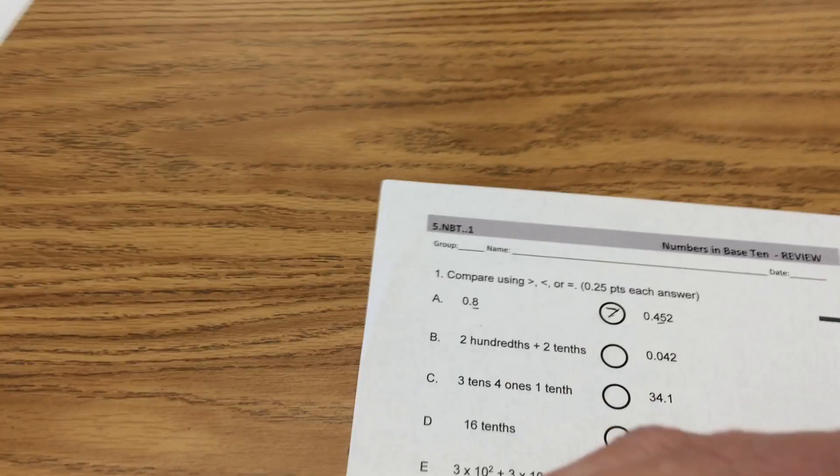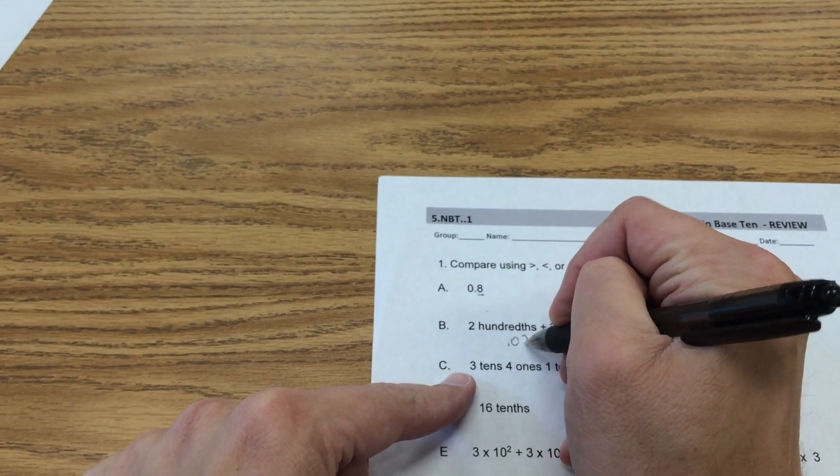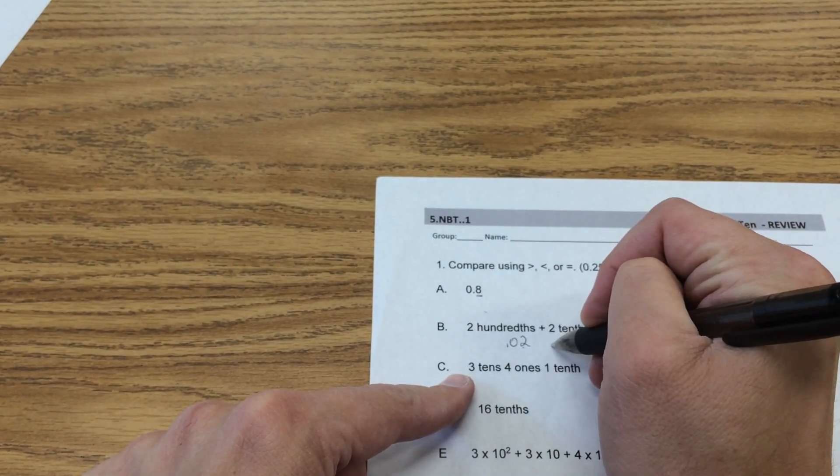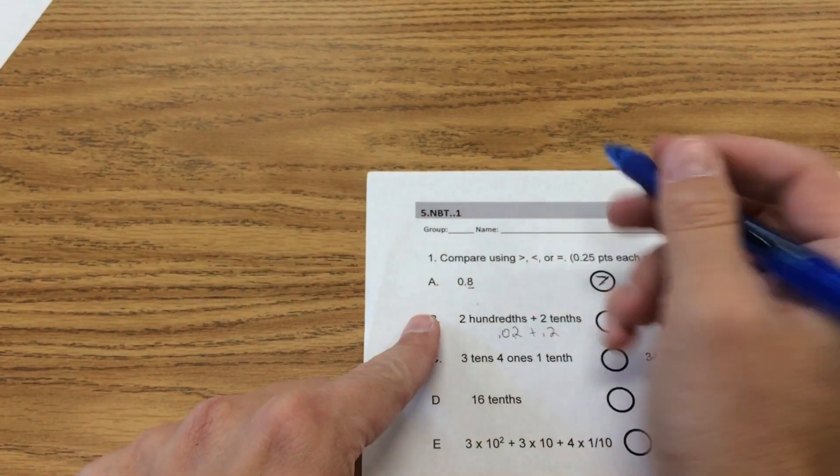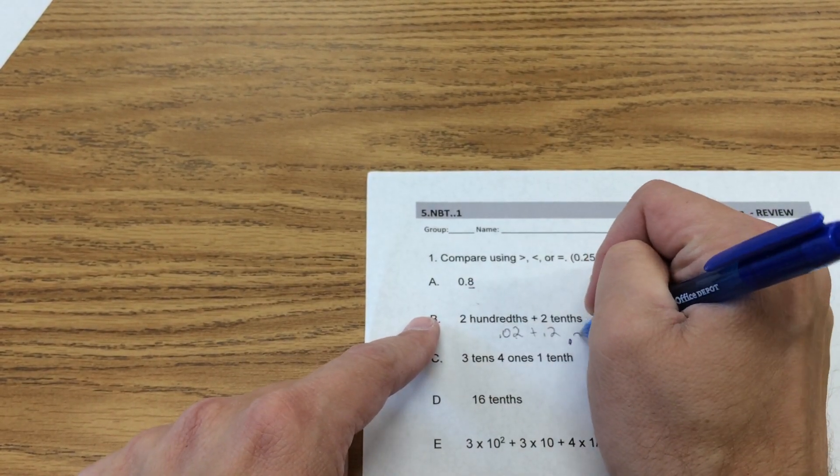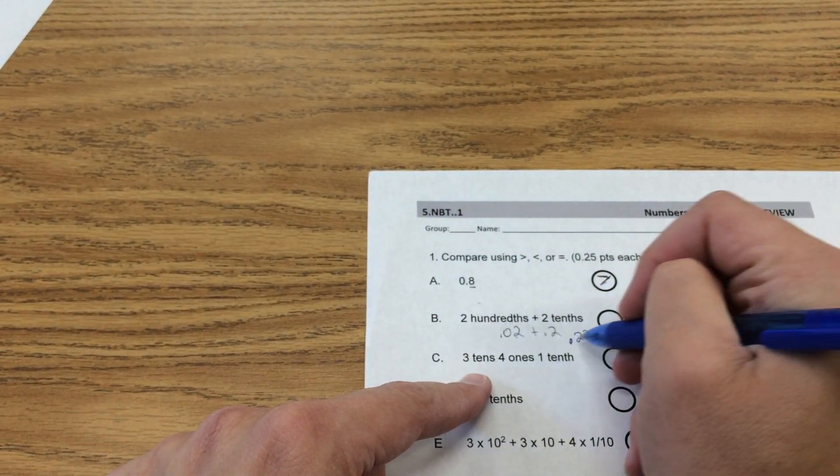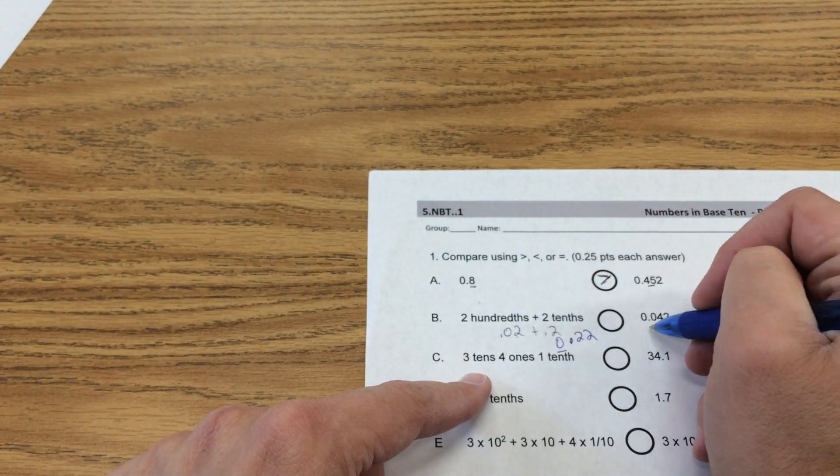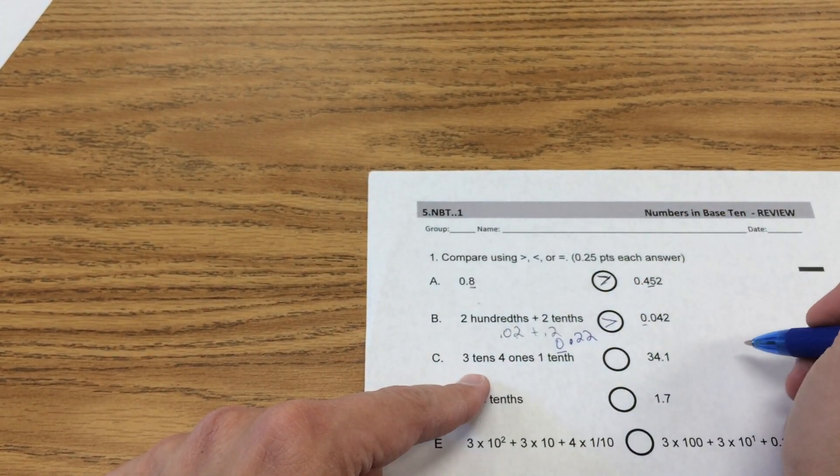Let's see. 2 hundredths and 2 tenths. Well here's 2 hundredths, here's 2 tenths. Put them together and I think we're going to get 22 hundredths. Let's see: no ones, no ones; 2 tenths, 0 tenths. This has to be bigger.